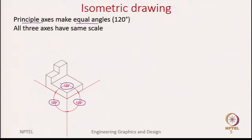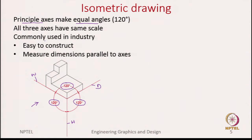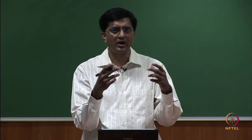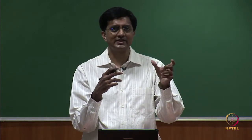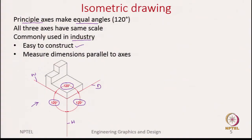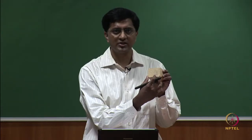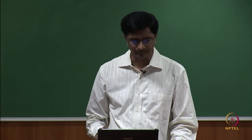Here is our example object shown in isometric drawing. The red lines indicate the three axes — one captures height, one captures width, and the other captures depth. Isometric drawings are very commonly used in industry because they give equal importance to all three dimensions — height, width, and depth — and use the true length of the object for lines parallel to these axes. For example, if the width is 5 centimeters, we draw exactly 5 centimeters.